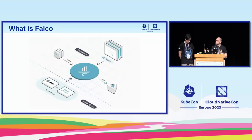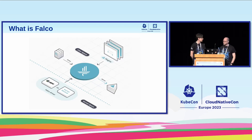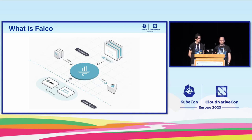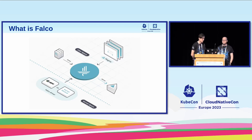Let's introduce Falco, for whoever hasn't heard of it. It's an open-source CNCF project that was born as a way to look into what's happening inside a kernel of a machine, create rules upon these events, and alert. For example, you can create an alert whenever someone opens a shell inside a container, or through some plugins you can also create rules based on Kubernetes events and AWS events, like if someone is modifying a config map.